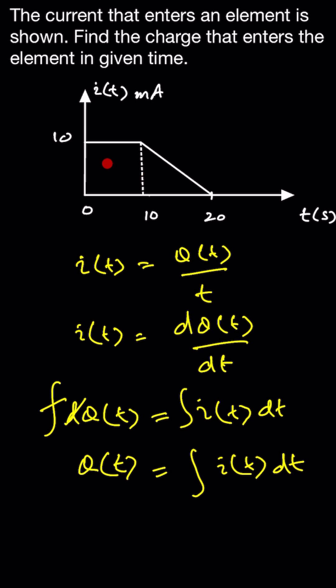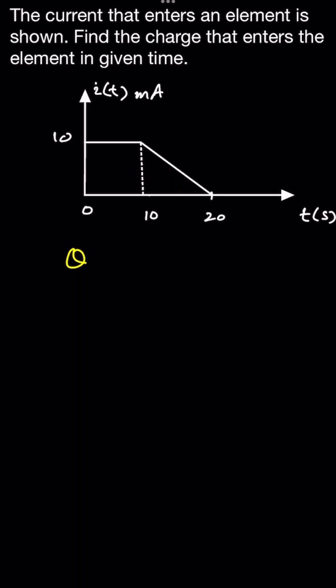So we can say that this is area 1, this is area 2. We can say that the total charge Q(t) is equal to the integral of i(t) dt, or we can say that the total area under the graph.